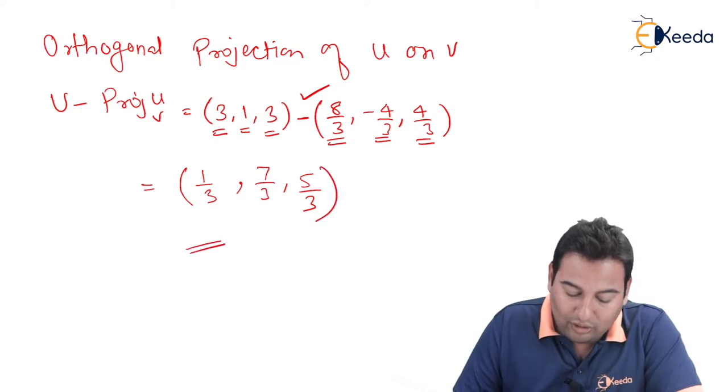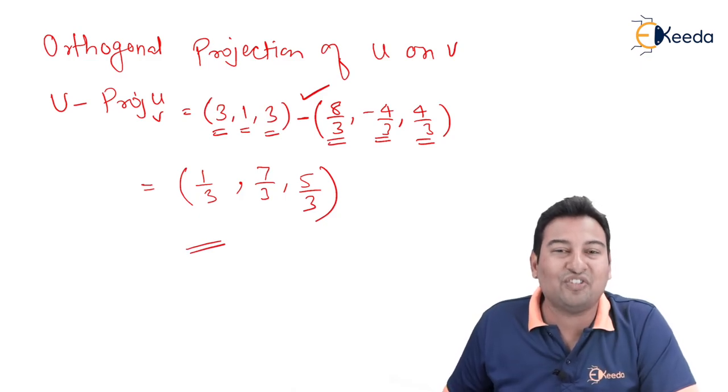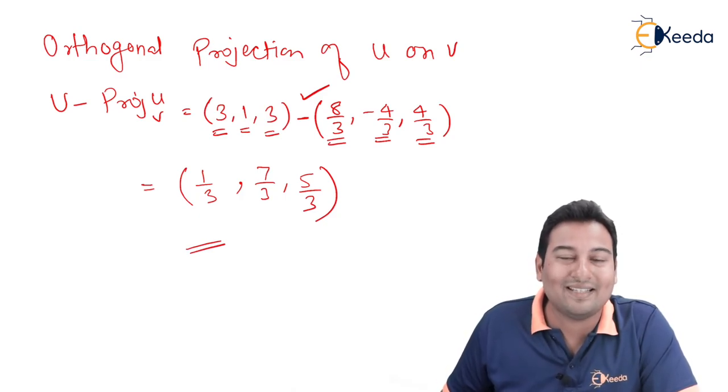This is your orthogonal projection of u on v. We discussed how to find projection. This will be required in the next type, that is Gram-Schmidt method, which is the most important type of this particular chapter. Thank you.